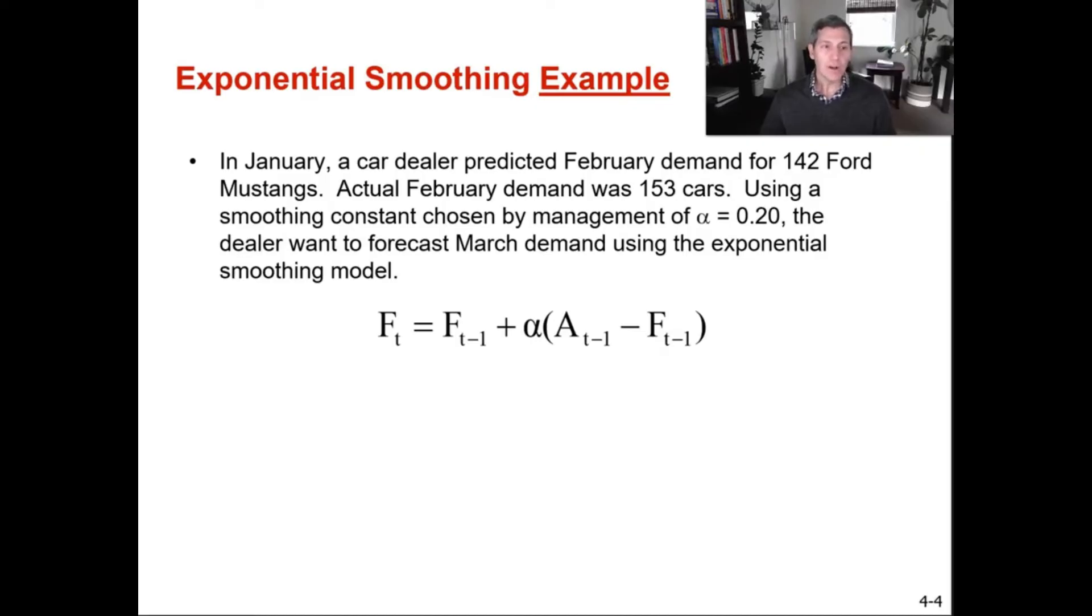In January, a car dealer predicted February demand for 142 Ford Mustangs. Actual February demand was 153 cars. Using a smoothing constant chosen by management of an alpha of 0.2, the dealer wants to forecast March demand using the exponential smoothing model.